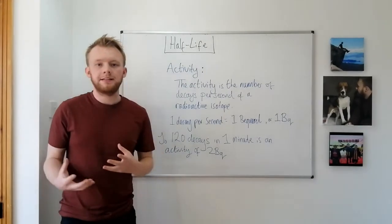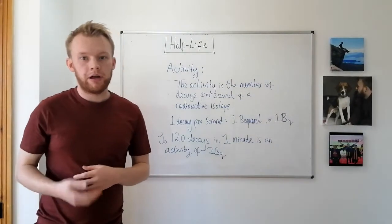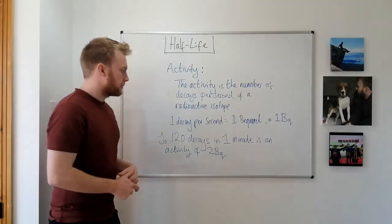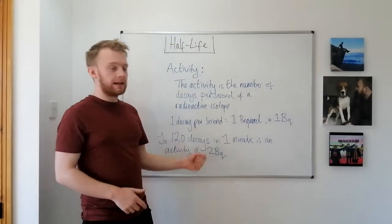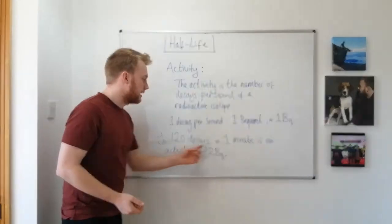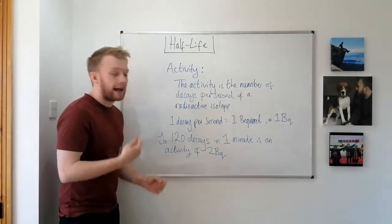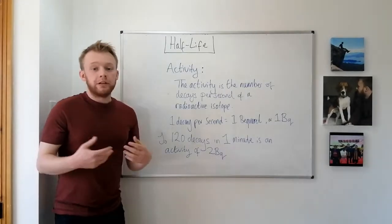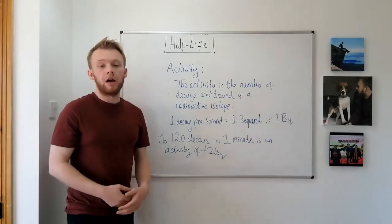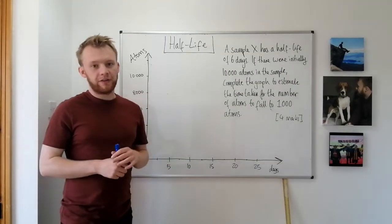What do I mean by the activity of a radioactive sample? The activity is the measure of the number of radioactive decays per second, and it's given the unit Becquerel, after the French physicist Henri Becquerel — so one decay per second is one Becquerel. For example, if a radioactive isotope has 120 decays in one minute, that's 120 decays in 60 seconds, meaning two decays per second — so the activity would be two Becquerels. We can use the half-life to work out how long it takes the activity to fall by half.